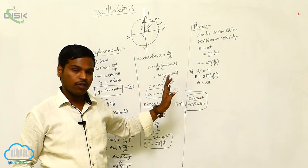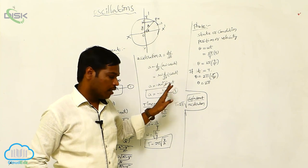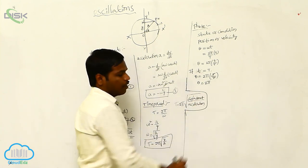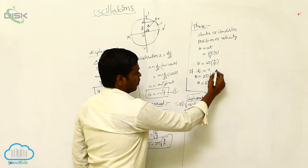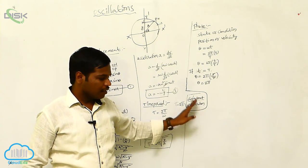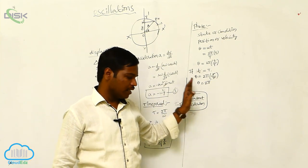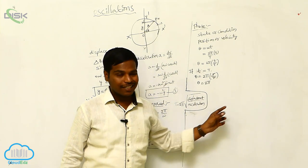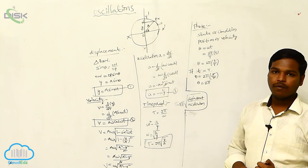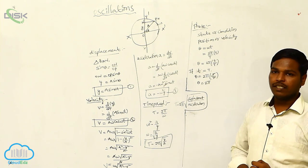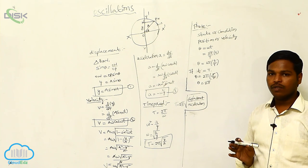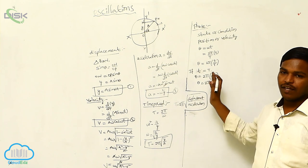Phase difference: if two particles executing simple harmonic motion are travelling in the same direction, the phase angle between them is 2π. If one particle is at the mean position and another is at the extreme position, the phase angle between them is π/2. If two particles cross the mean position at the same time but in opposite directions, the phase difference between them is π.